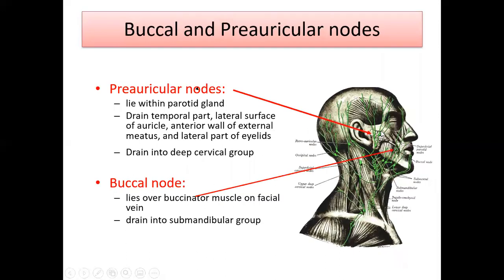The pre-auricular lymph node is located anterior to the auricle of the ear. It lies within the parotid gland and drains the temporal region, the lateral surface of the auricle, the anterior wall of the external auditory meatus, and the lateral part of the eyelid.